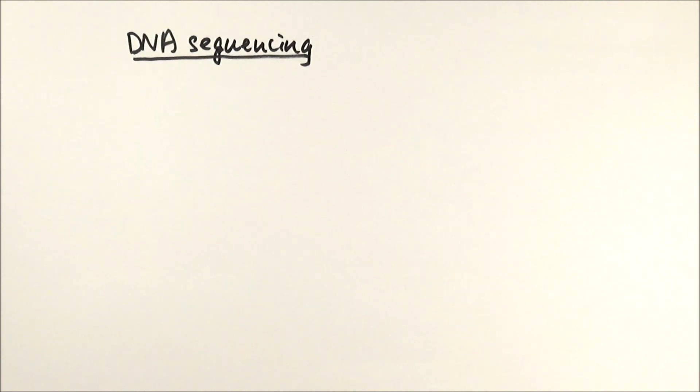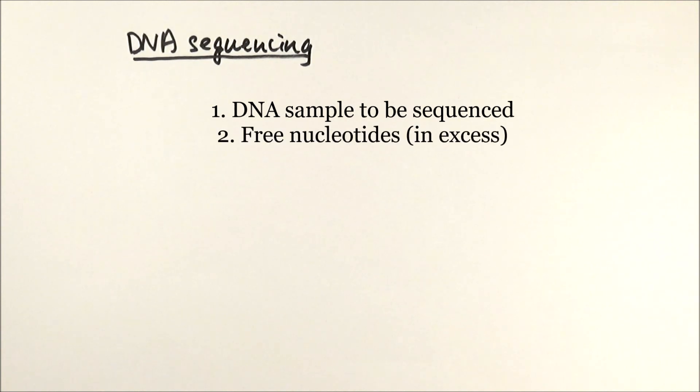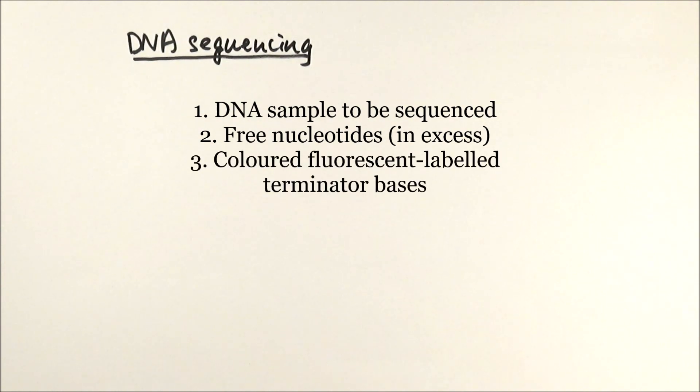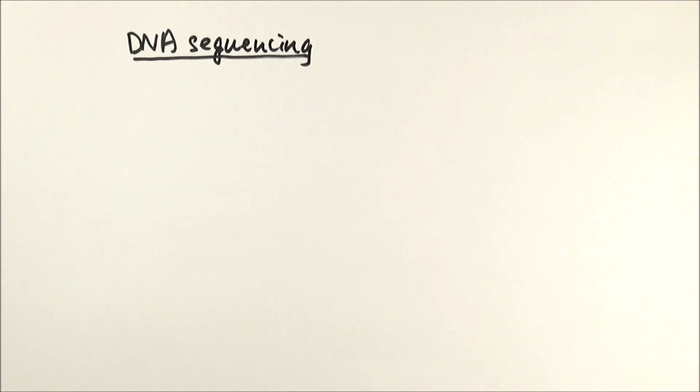It will need five things. First, the DNA sample that we're sequencing. Second, lots of free nucleotides in excess so we can sequence everything. Third, colored fluorescently labeled terminator bases. We call these terminal bases because they are missing a particular oxygen, meaning that once it is added, the DNA strand can no longer continue to extend. We'll also need DNA polymerase to anneal the nucleotides together and a primer which starts the entire process.